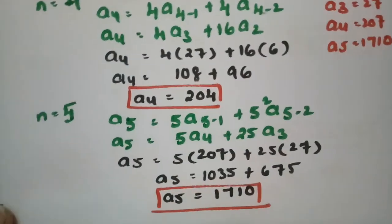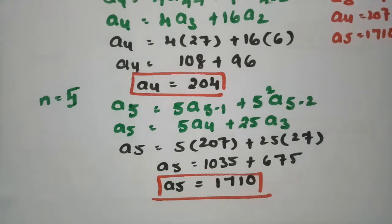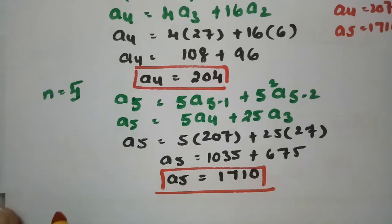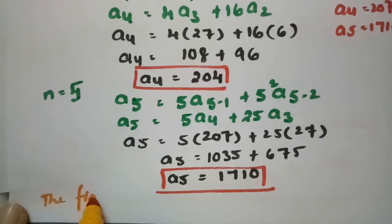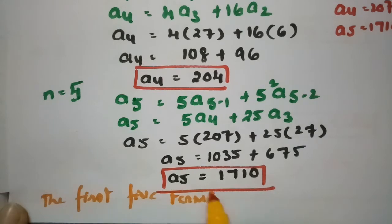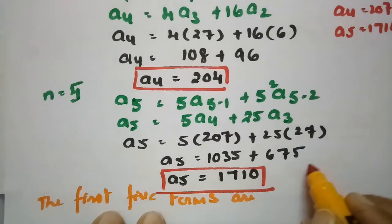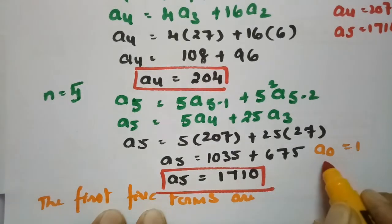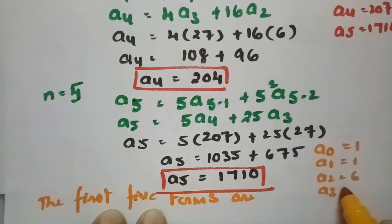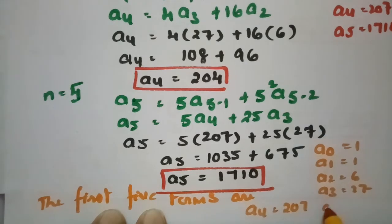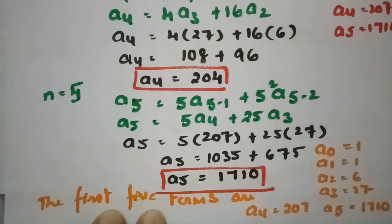Therefore the first five terms are: a_0 = 1, a_1 = 1, a_2 = 6, a_3 = 27, a_4 = 207, and a_5 = 1710.